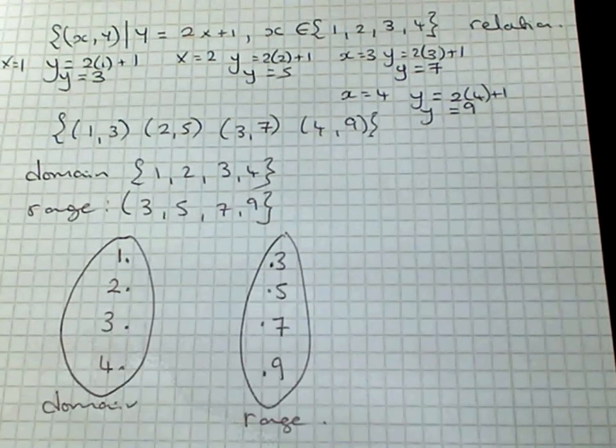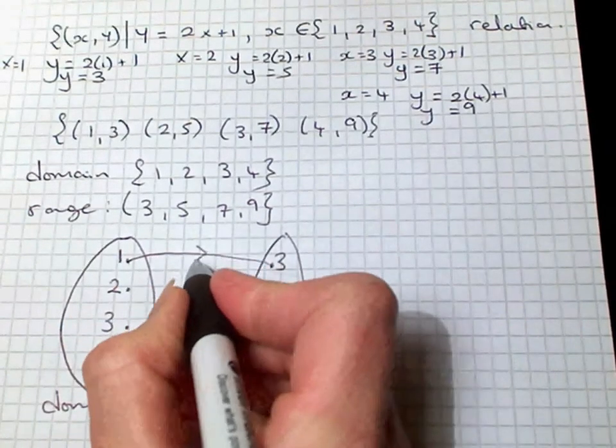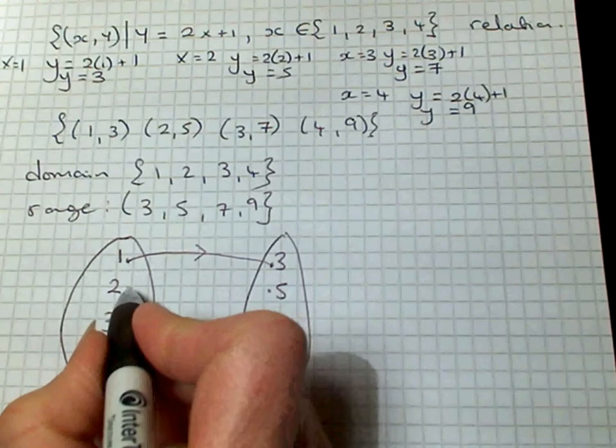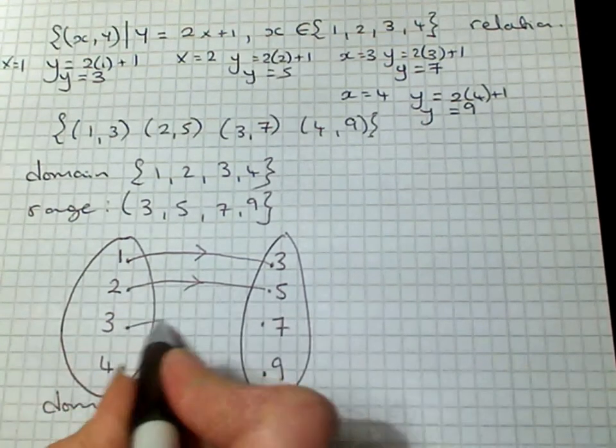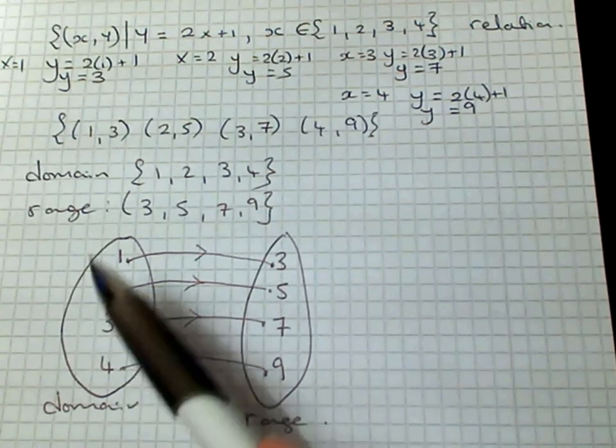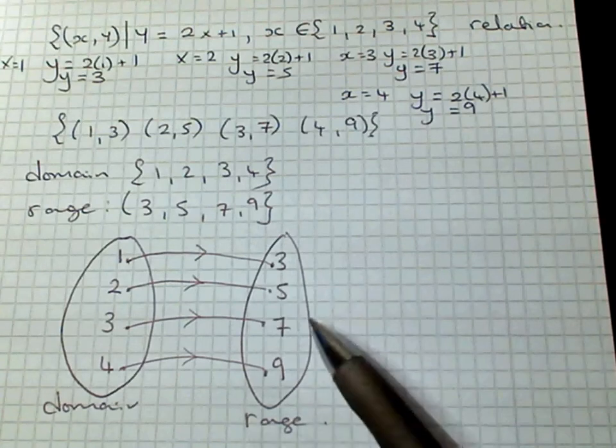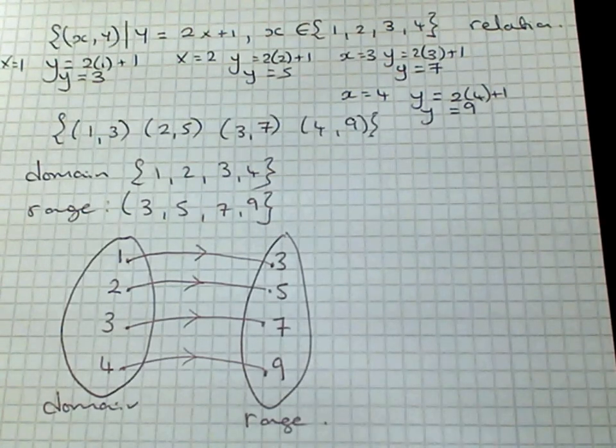And each input value has a unique output value. So 1 goes to 3, 2 goes to 5, 3 goes to 7, and 4 goes to 9. And each input only has one output value. And that's very important when you're looking at what a function is.